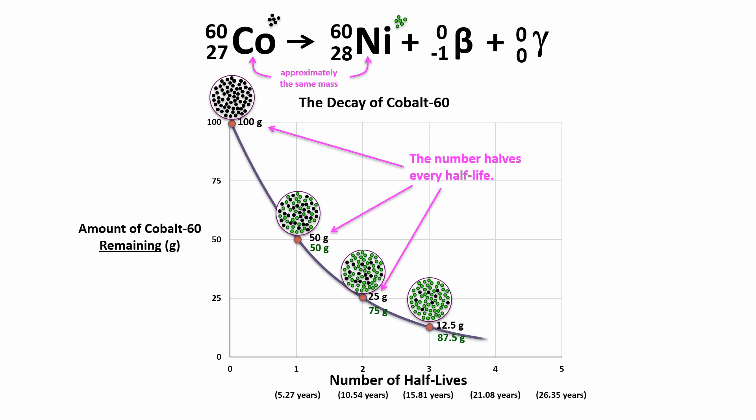The process will continue for a long time, and the number of cobalt-60 atoms will just keep getting smaller. This also means that the radiation given off by the sample will slowly decrease.